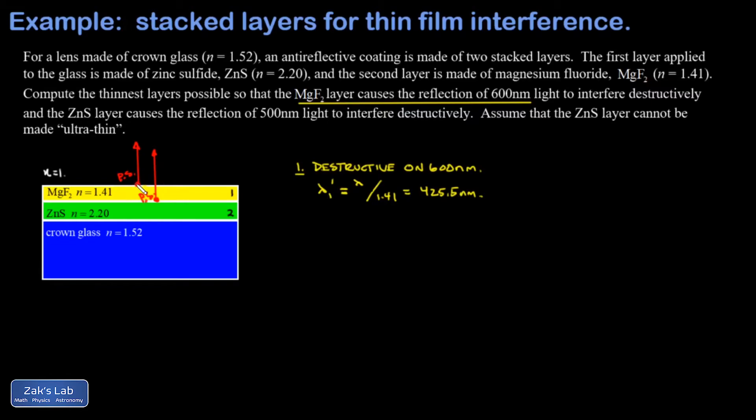Both of these reflected rays are phase shifted. The other thing that may cause a phase shift is the path length difference caused by the second reflection traveling all the way through the thin film and back out again. I'm going to call the thickness of this first film t1, so that second reflection has an extra distance of 2t1 to travel. Because both reflections caused a phase shift,